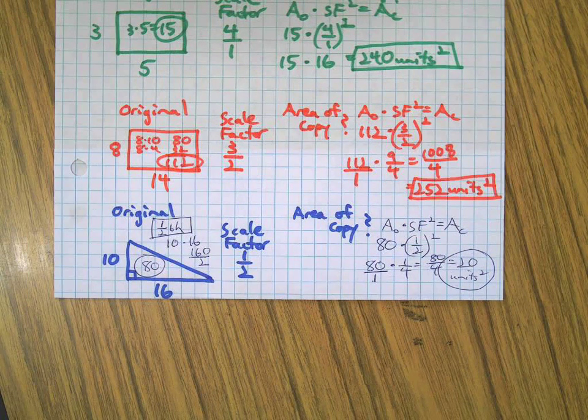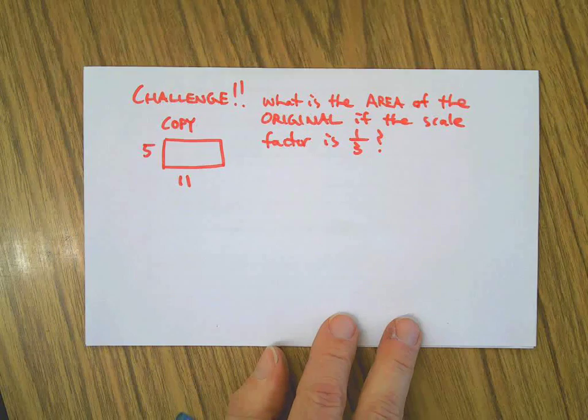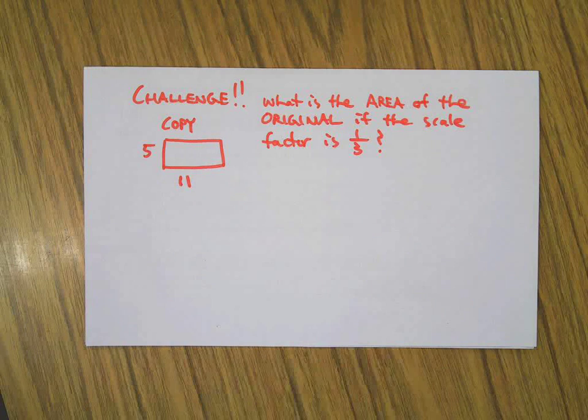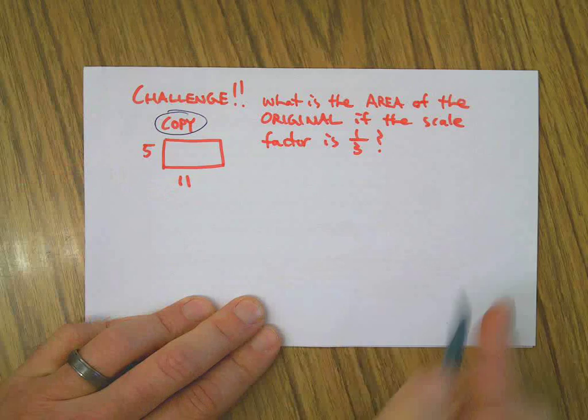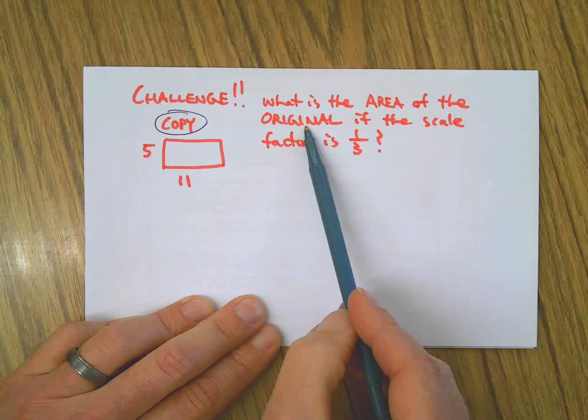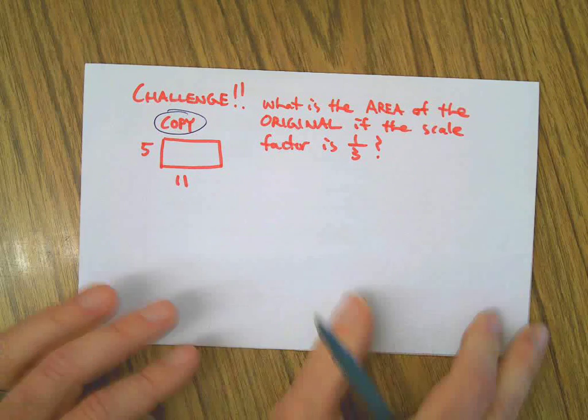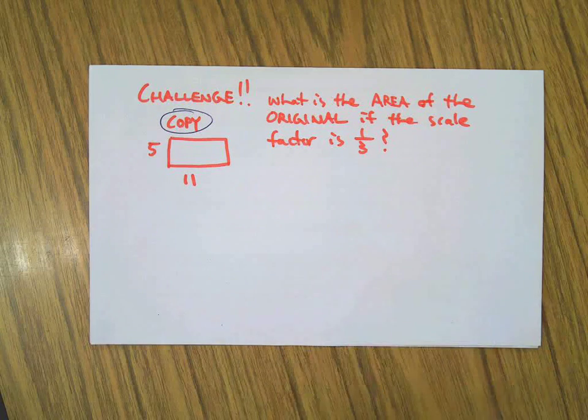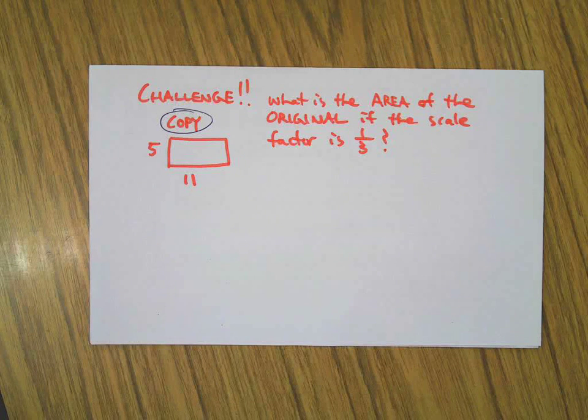Special challenge. Okay, on this one I'm giving you the copy, giving you the dimensions of the copy, and I want you to find out the area of the original. And the scale factor is one third. Okay, go ahead and figure that out. Pause the video, do some work, and then we'll do it together when you come back.